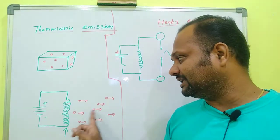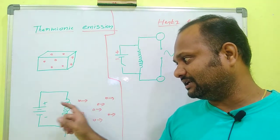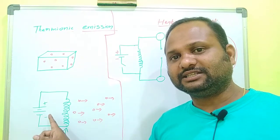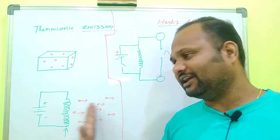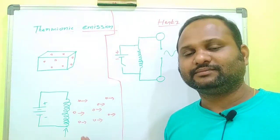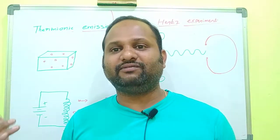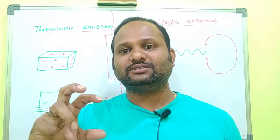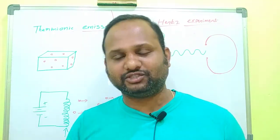The electrons — the negative ions — are emitted because of the thermal energy given by the source. Due to that thermal energy, ions are emitted. This is called thermionic emission. In this way, electrons are emitted. Thermal energy is the cause which emits electrons. So this is called thermionic emission.